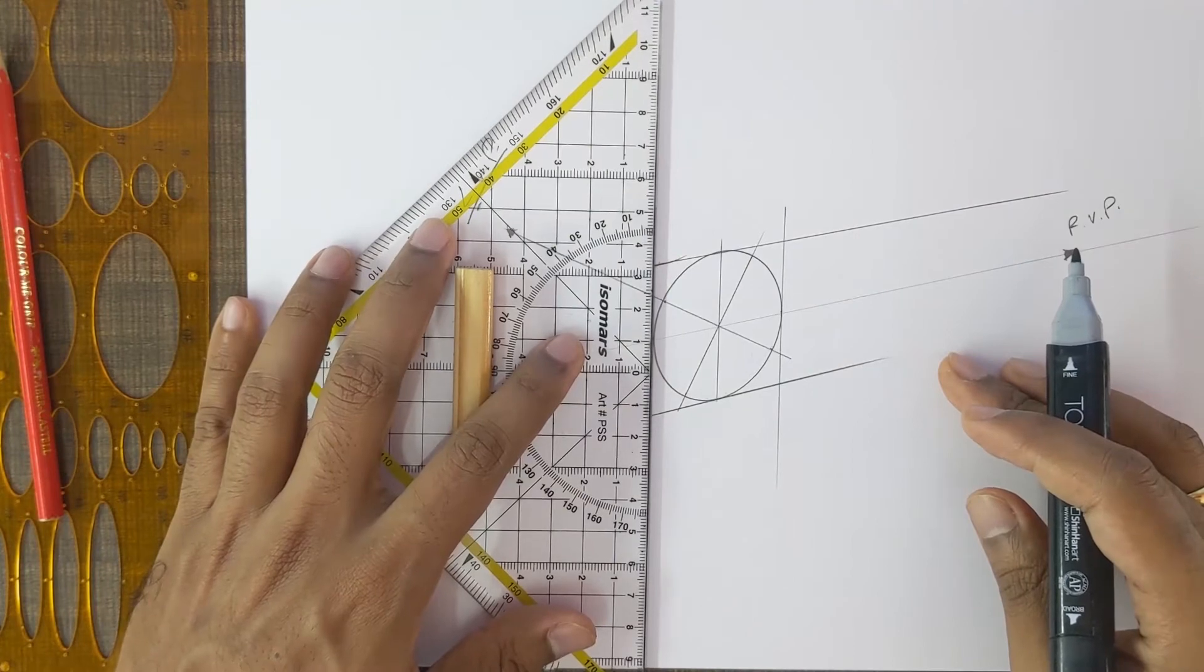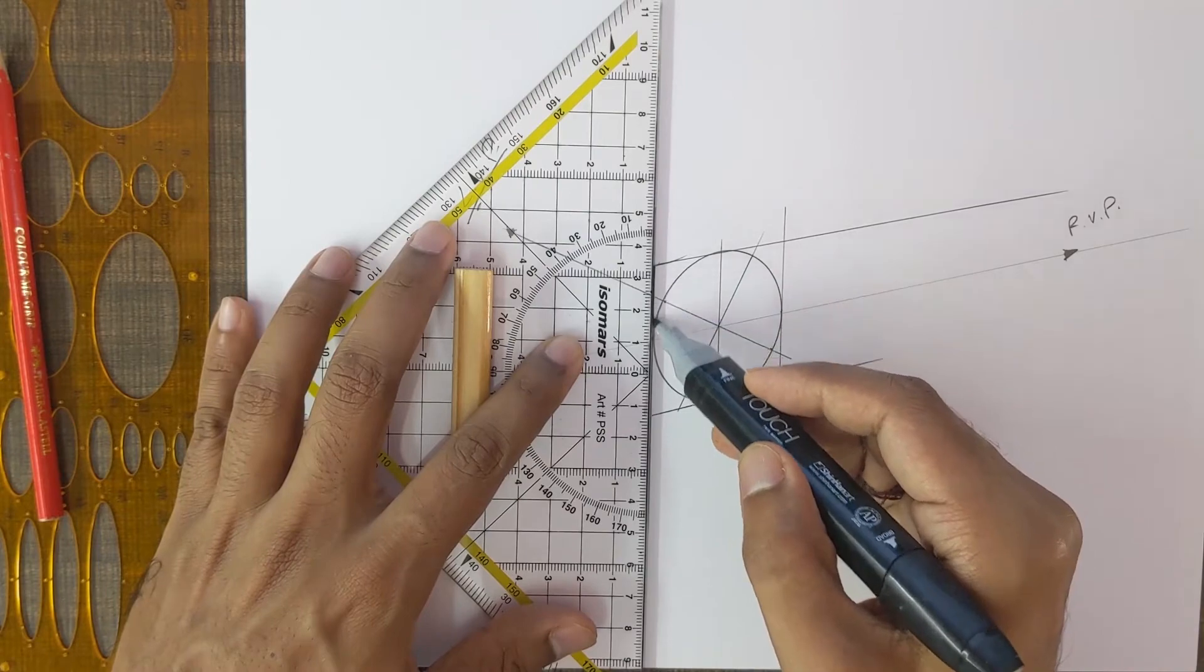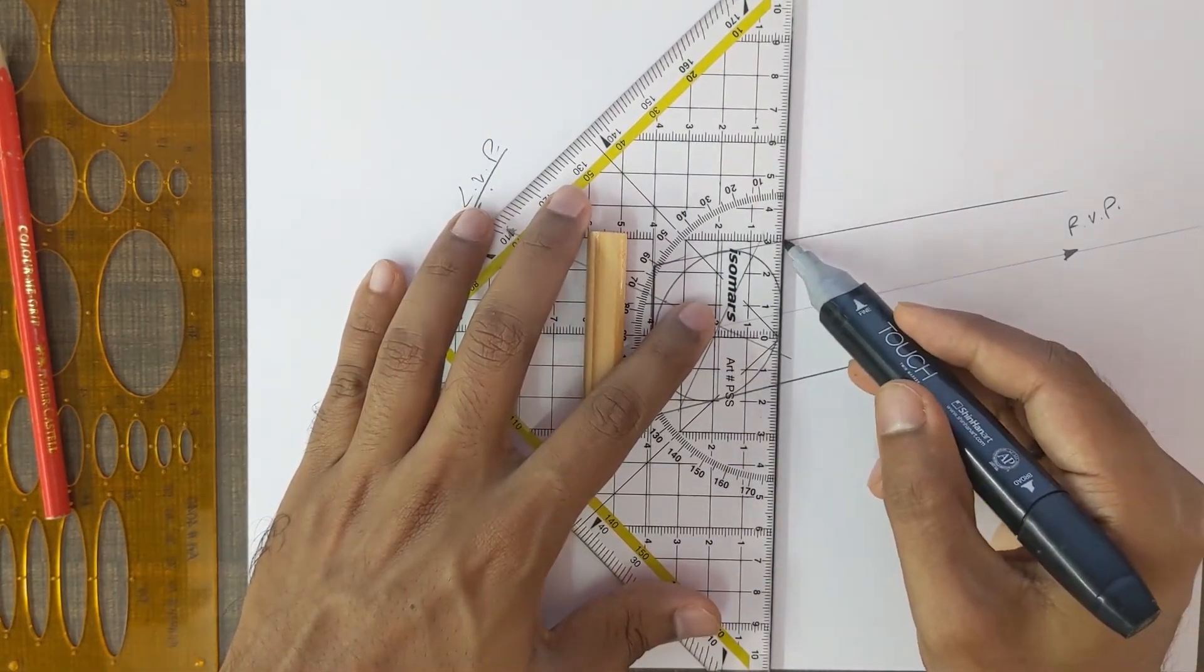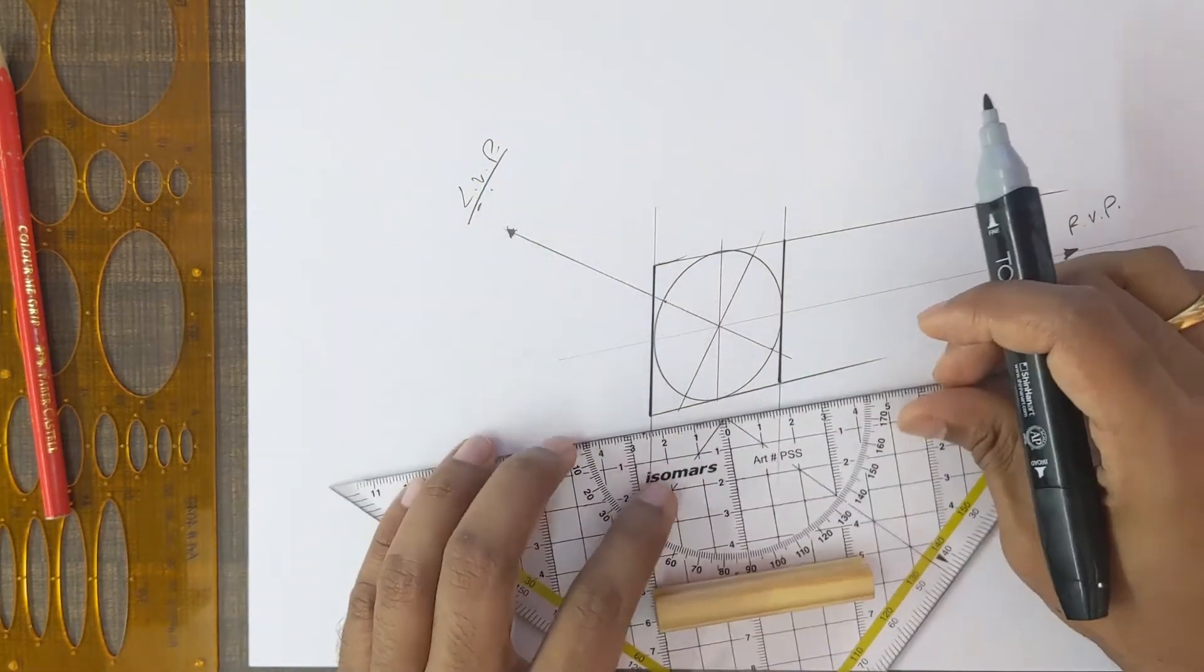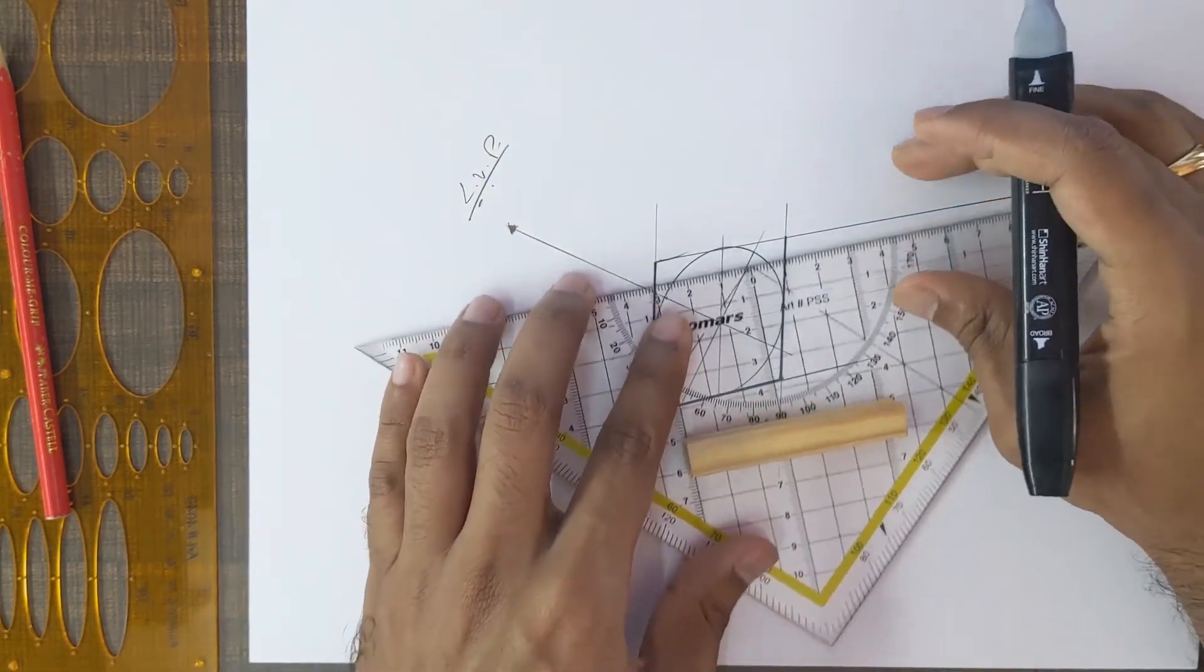So I'll just darken it using a marker. So yeah, it's a pretty simple trick.